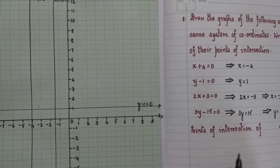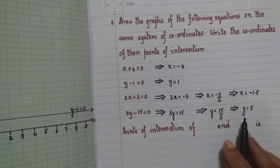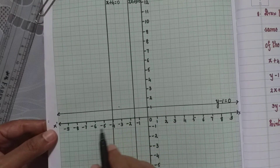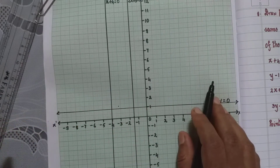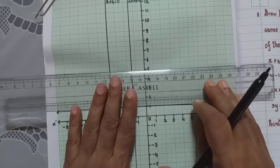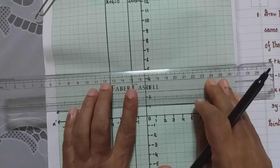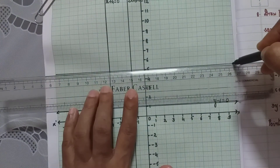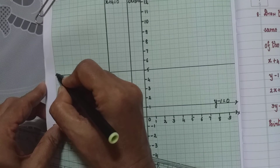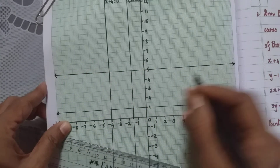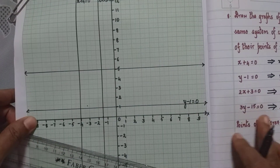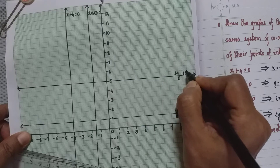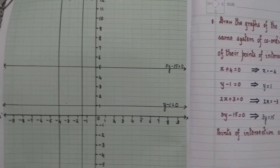The next equation is 3y minus 15 equal to 0. The simplified version is y equal to 5, which is a line parallel to the x-axis passing through 5 on the y-axis. I keep my scale at 5 on the y-axis and draw a horizontal line, putting arrow marks on both ends. The original equation written against it is 3y minus 15 equal to 0.